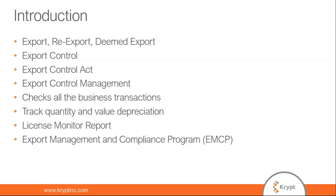There are two important export control laws in the US: EAR and ITAR. EAR is from the Department of Commerce, BIS. ITAR is from the Department of State, DDTC. Export control typically refers to regulations set by several federal agencies — especially the Department of State, Commerce, and Treasury — in order to protect national security, promote foreign policy, and mainly to control short supplies.